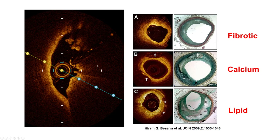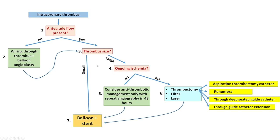So this is intraluminal thrombus. The next question is how to treat it. This is obviously a large thrombus with undergrade flow, and the patient did have ongoing ischemia with intermittent symptoms through the previous days. The options for treating large thrombus include doing thrombectomy, potentially using a filter to capture any liberated thrombus, and potentially using laser in an attempt to vaporize the thrombus.